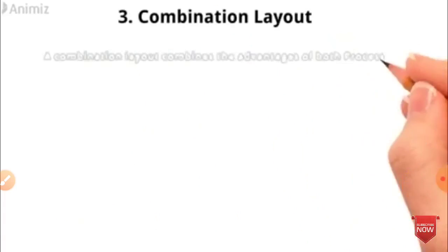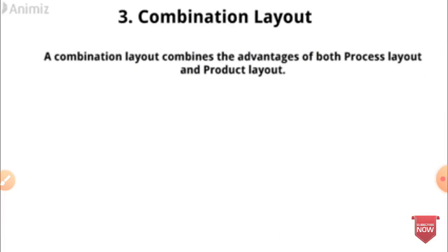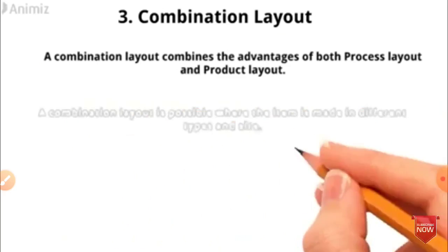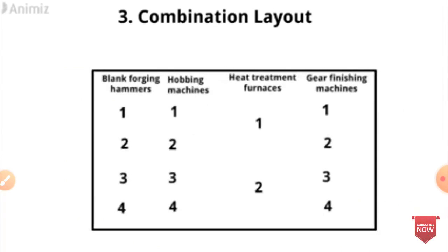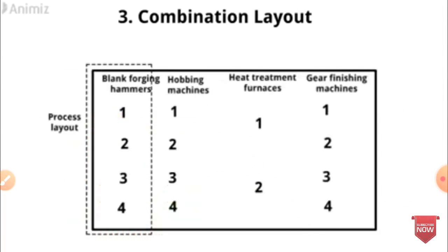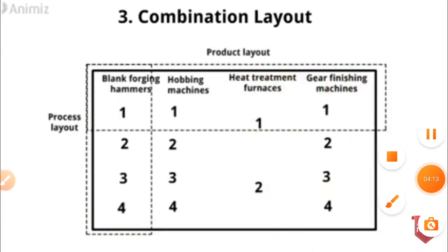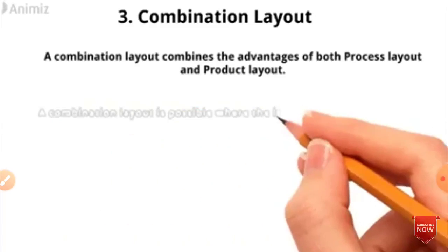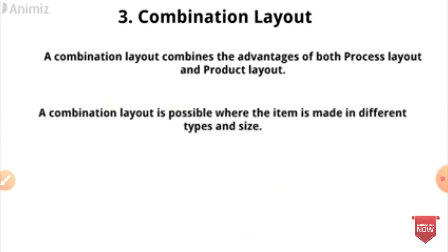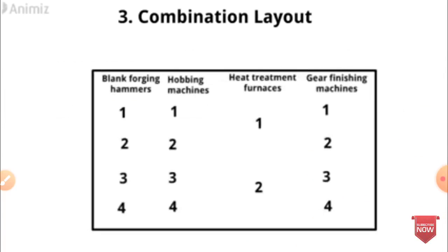The third type of layout is Combination Layout. Combination Layout combines the advantages of both Process Layout and Product Layout. It is possible where items are made in different types and sizes.